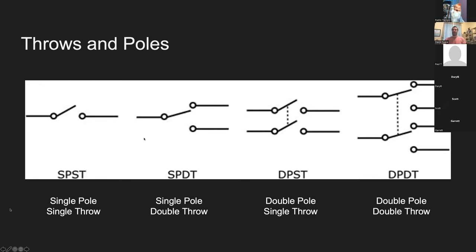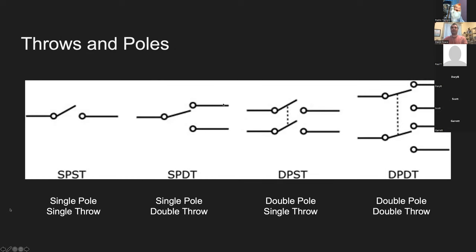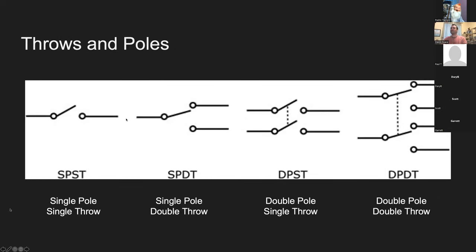The three contacts are: the common contact, the normally closed terminal — which in its relaxed unactuated state connects to the common — and the normally open terminal, which is not connected by default. When the button is pressed, this little switch moves to the normally open contact.